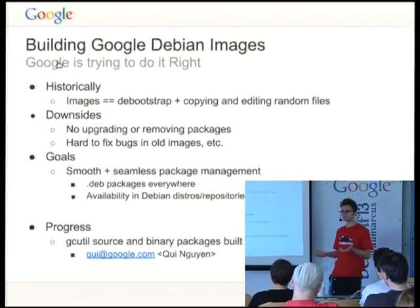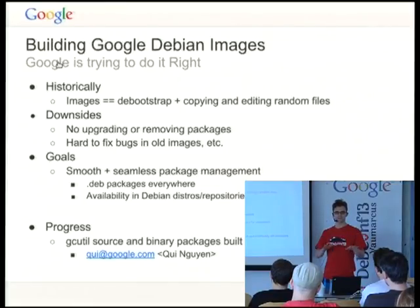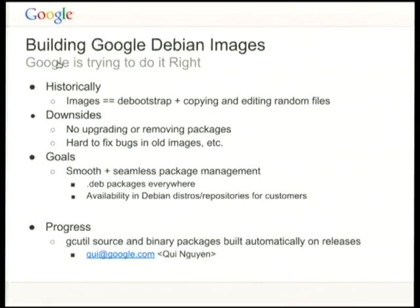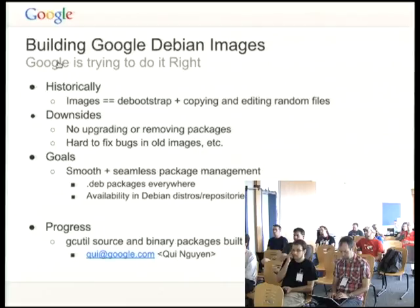Hopefully you guys can help me figure out what we need to do, either inside Google or between Google and Debian, to figure out how to deal with these sorts of problems going forward. Like I said yesterday, historically when we built our images, we just debootstrapped a file system image and then just copied all of our files inside. That was suboptimal — you can't update packages, you can't remove them. It's just a less smooth customer experience.